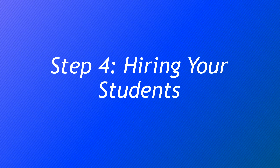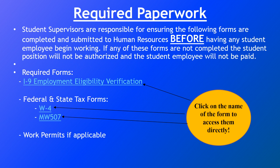So step four: hiring your students. The first step to hiring your students is understanding the required paperwork for hiring student employees at Goucher. There are several forms that must be filled out by both you and your student employees in order to be eligible for payroll. These forms must be submitted to the Office of Human Resources by the student employee themselves in order to be authorized to work on campus. These are not to be submitted by you, but are the student's responsibility to complete prior to working in any office on campus, and must be submitted and authorized before they begin working.